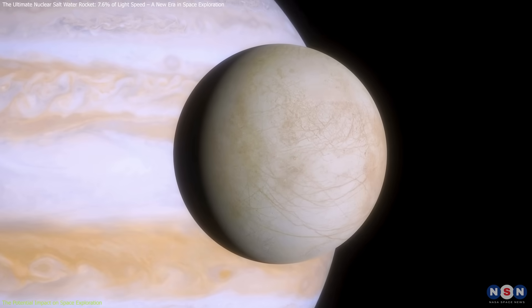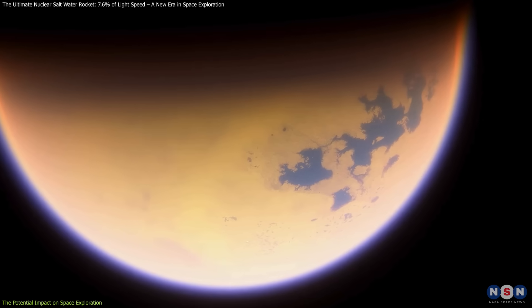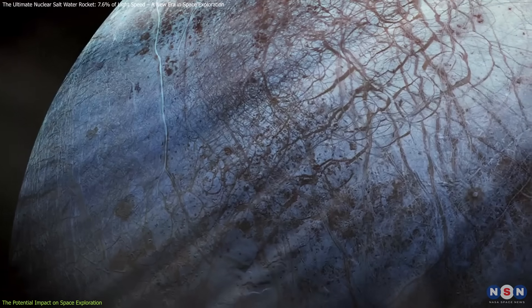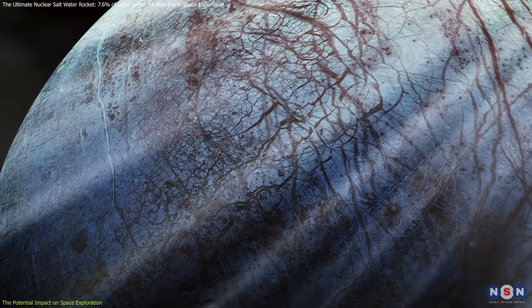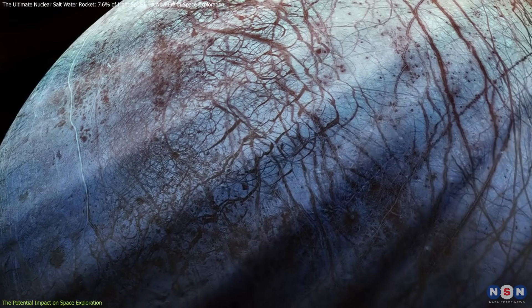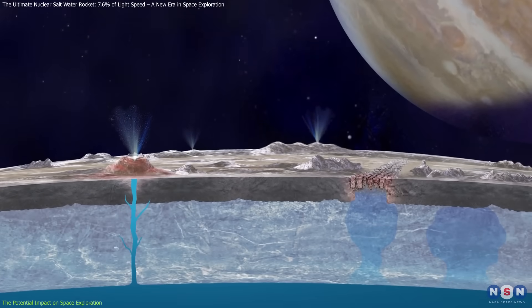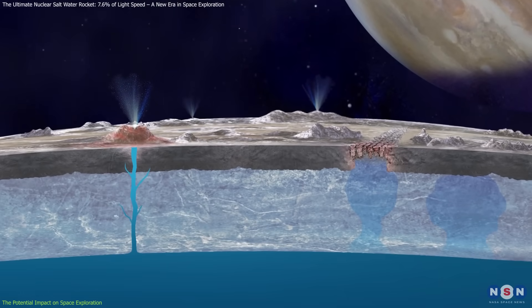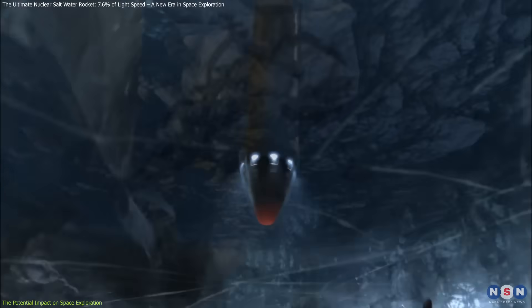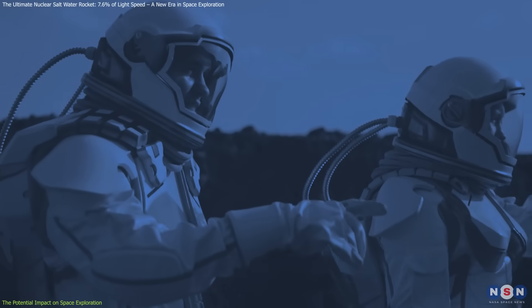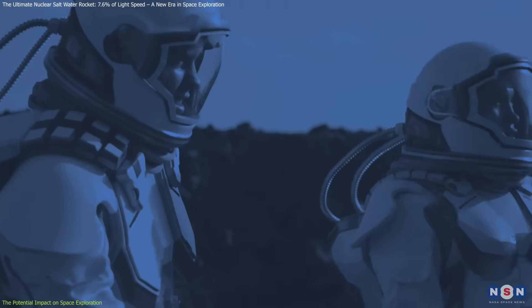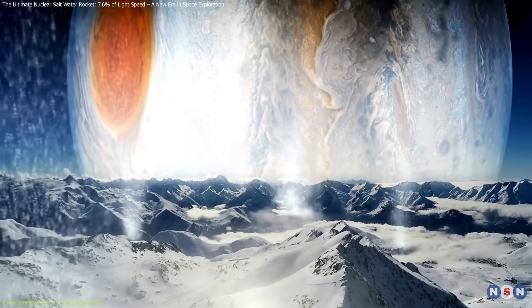Similarly, missions to Europa, Titan, and Enceladus, which hold the best chances of discovering extraterrestrial life within our solar system, could become much more feasible. These icy moons contain vast subsurface oceans, and being able to transport advanced robotic probes, drilling equipment, and even human researchers in a reasonable time frame would be a major breakthrough in astrobiology.